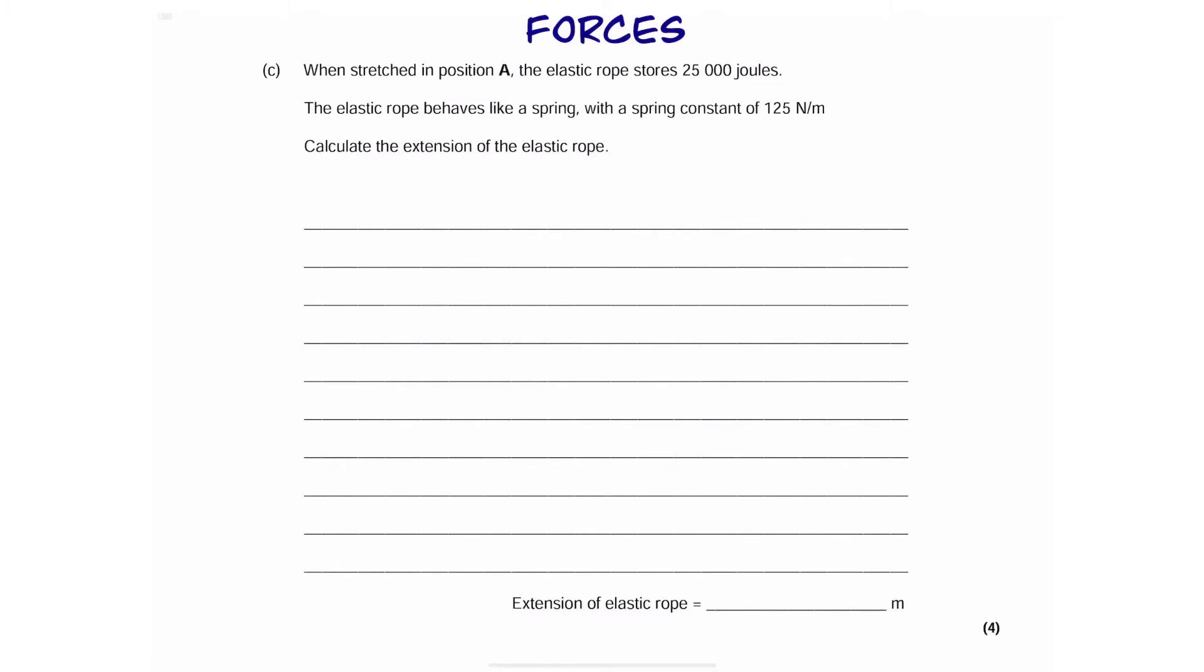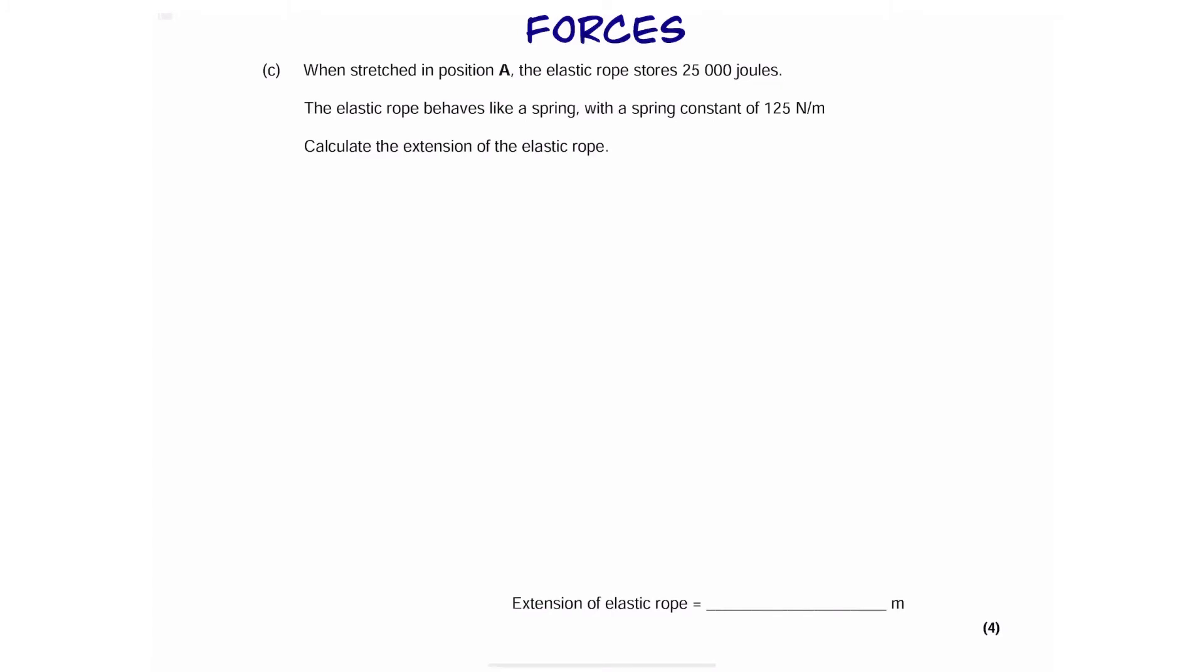Okay, part C involves a calculation. So, let's get rid of these lines to make things much neater. We've been given energy, we've been given a spring constant, and we've been asked to work out extension. So, to answer the question, we need to know what equation to use. Since we've been given spring constant, we know that we could use this equation: elastic potential energy is equal to half K e squared.